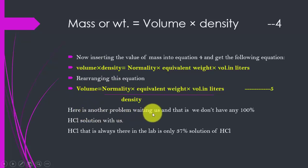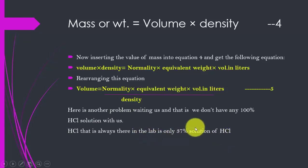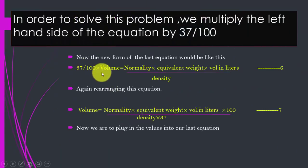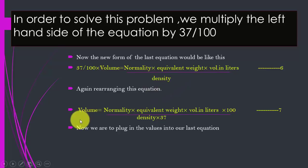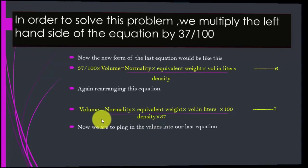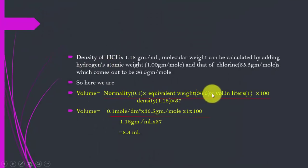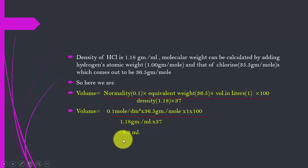There is another problem: we don't have a 100% HCl solution in the lab — the HCl available is only 37% solution. So we include this factor into the equation. After rearrangement, volume equals normality × equivalent weight × volume in liters × 100, divided by density × 37. Plugging in all the values gives us 8.3 mL of the 37% HCl solution.